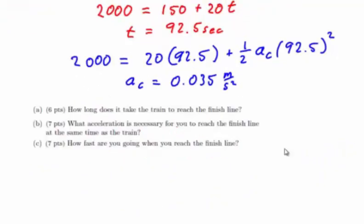Examining what we were originally asked, simply by approaching the problem as a definition of success, we have already answered number one, when does the train reach the finish line? And number two, the acceleration necessary for the car to reach at the same time.